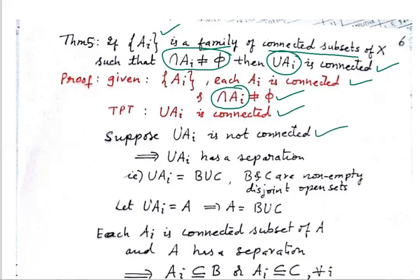Suppose it is not connected, then it has a separation. Say, it has a separation — two sets B and C — so the union equals B∪C, where B and C are separated sets. In other words, B and C are non-empty, disjoint, open sets.